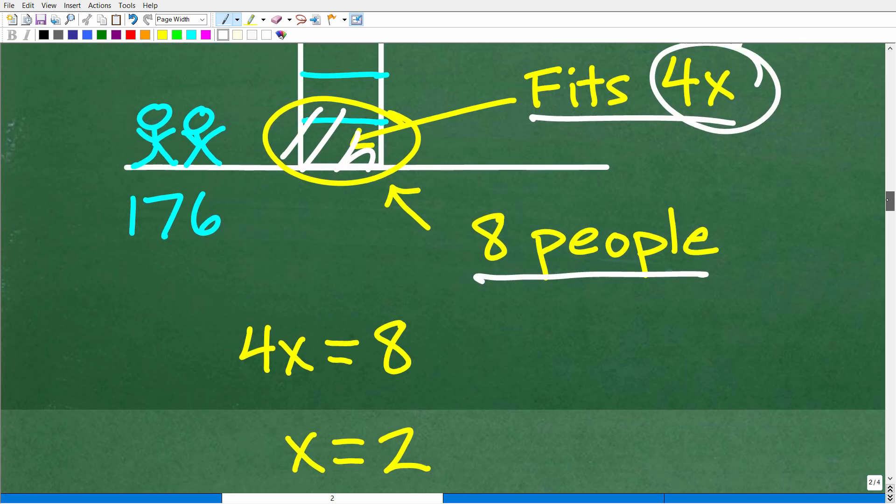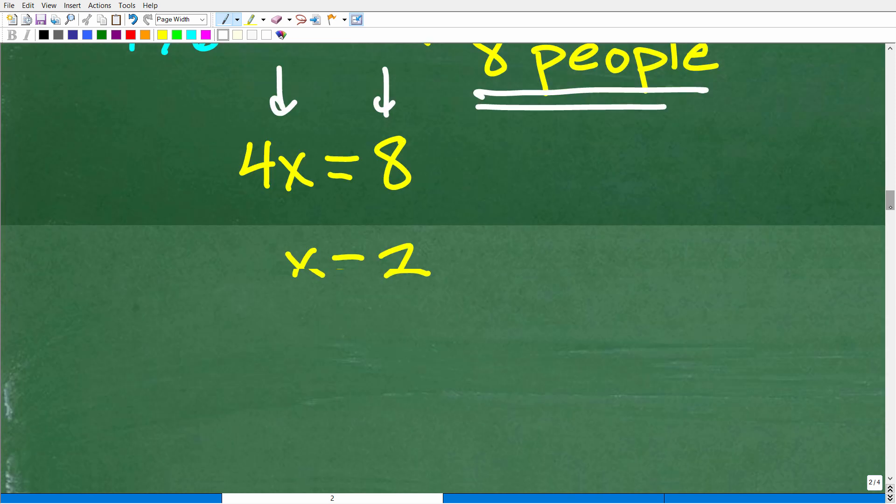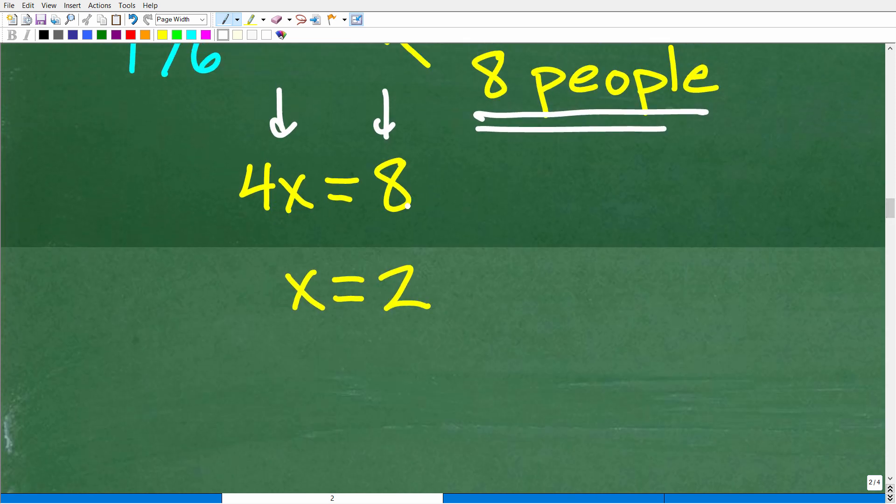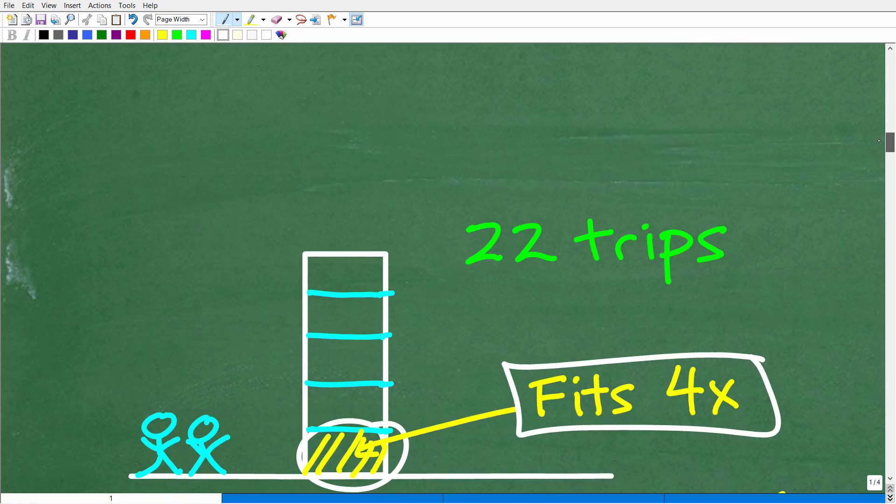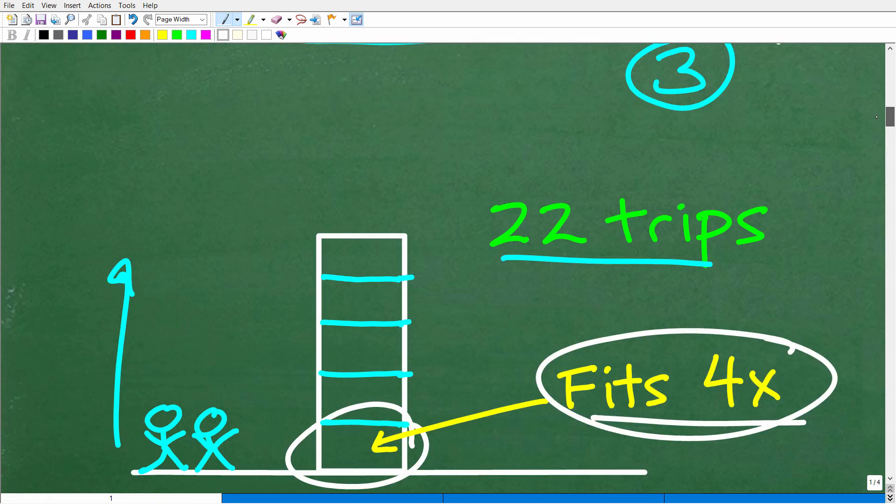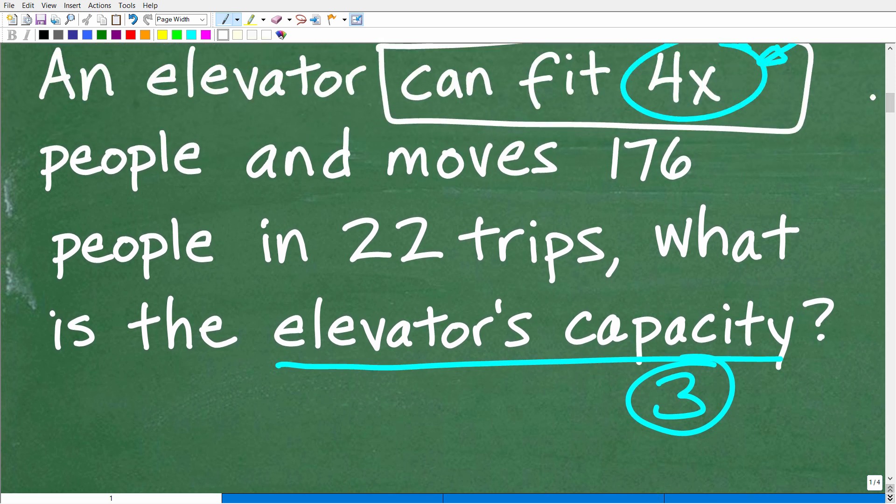We can certainly solve for x because if the elevator fits 4x people, well how many people does it fit? Well it fits 8 people. This is in fact, 8 people is in fact the capacity. That is the question. But some of you may have went off on this kind of tangent and set up this equation. 4x is equal to 8, x is equal to 2. And that is great. And that is fantastic. And that would have been excellent if the question here was to solve for x. Of course, that is not the question. The question is, hey, what is the elevator's capacity?